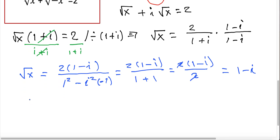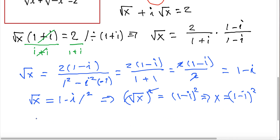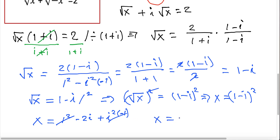Now we want to find the value of x. To find x, we square both sides. Squaring square root of x gives x, and squaring (1 − i) gives (1 − i)². Expanding the binomial: x equals 1² − 2(1)(i) + i². Since i² equals −1, we get x = 1 − 2i − 1. The 1 and −1 cancel, so x equals −2i.